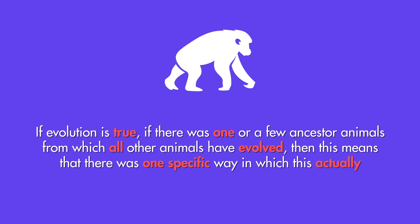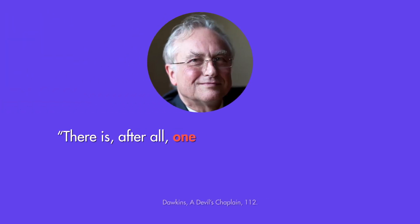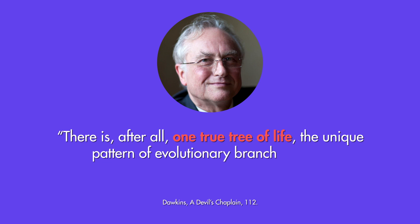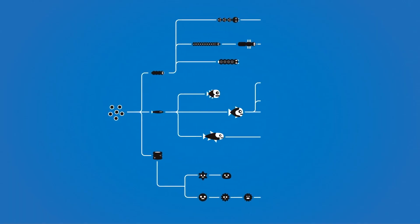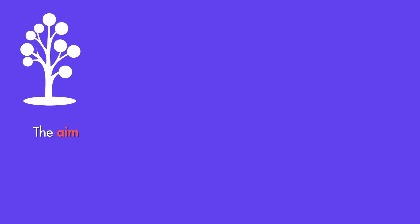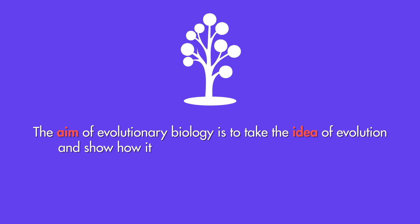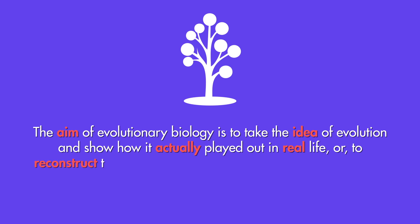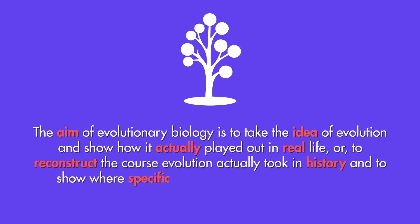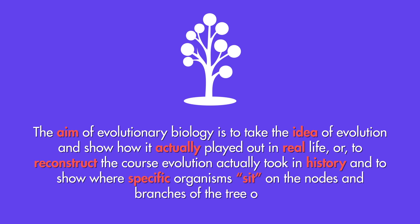If evolution is true, if there was one or a few ancestor animals from which all other animals have evolved, then there was one specific way in which this actually happened historically. This is perfectly captured by Richard Dawkins, who says: 'There is, after all, one true tree of life — the unique pattern of evolutionary branchings that actually happened.' Evolution must have unfolded in one specific way and, accordingly, the tree of life has one specific shape, with each branch and node occupied by a specific organism. The aim of evolutionary biology is to reconstruct the course evolution actually took in history and to show where specific organisms sit on the nodes and branches of the tree of life.